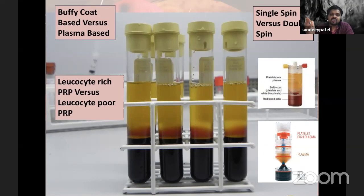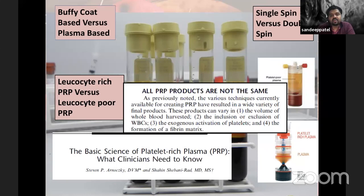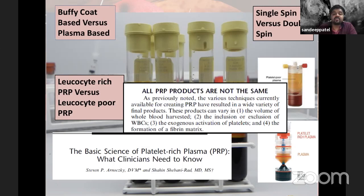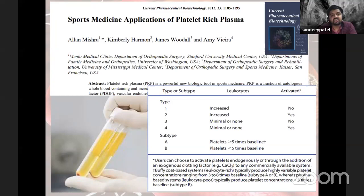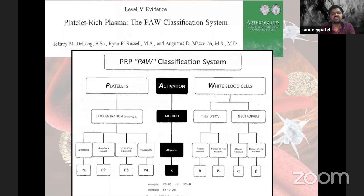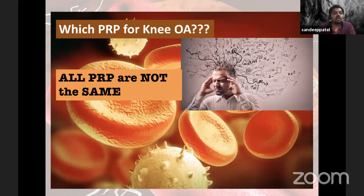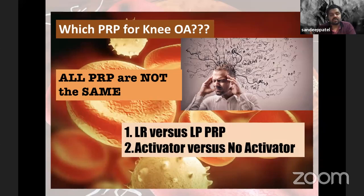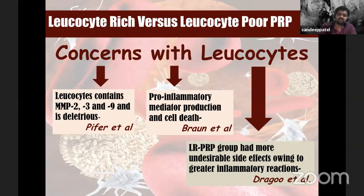Are all PRP products the same? No — they vary by volume of blood extracted, inclusion or exclusion of WBCs, platelet activation, and fibrin matrix formation. The Mishra classification accounts for leukocyte presence, activation status, and concentration. The PLRA classification further considers platelet concentration, activation requirement, and WBC inclusion. The key question is: leukocyte-rich or leukocyte-poor? Leukocytes contain MMP-2 and MMP-3 (matrix metalloproteinases), which can be deleterious, with pro-inflammatory mediator production causing cell death and undesirable side effects. However, some in vitro studies say a small amount of leukocytes is good for chondrocyte proliferation and hyaluronic acid production.